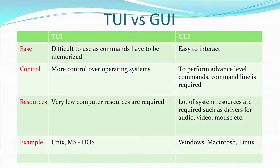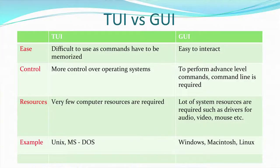This slide compares the text user interface versus the graphical user interface. A text user interface is difficult to use because commands have to be remembered and typed, and if there is an error in the command it will not be executed. A graphical user interface is easy to use. Regarding control, a text user interface has more control over the operating system. For certain advanced functions in a GUI, you still need the command line — for example, to use the ping command you must go to the DOS prompt.